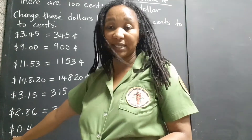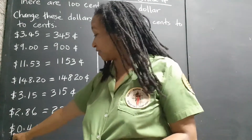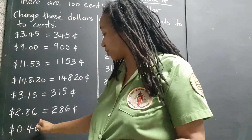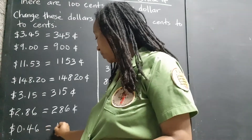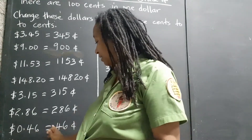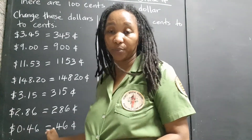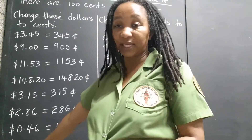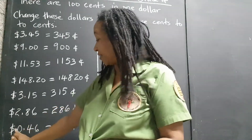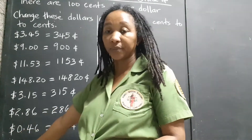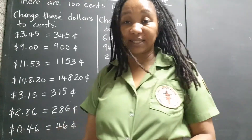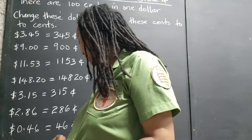Now, what about $0.46? If we're moving two places to the right, we're only going to end up with 46 cents. We do not need to write zeros at the front of numbers. Likewise for $0.07 — even though we have the dollar sign there, there are no dollars, zero dollars — so we still only call the cents. So this is already 7 cents.